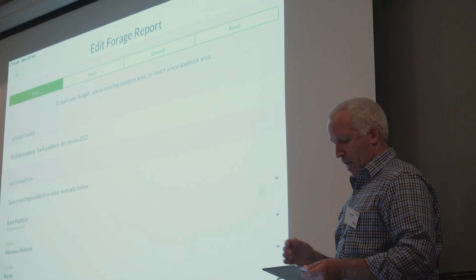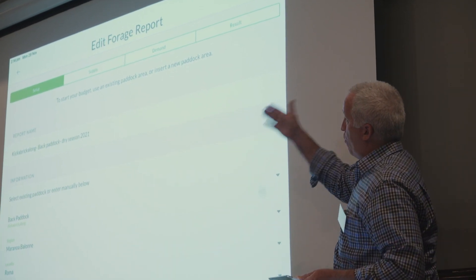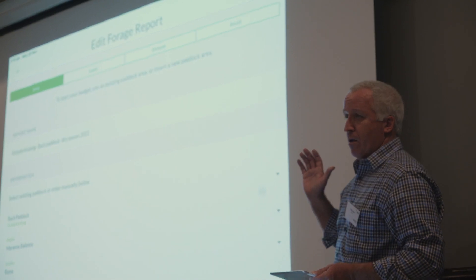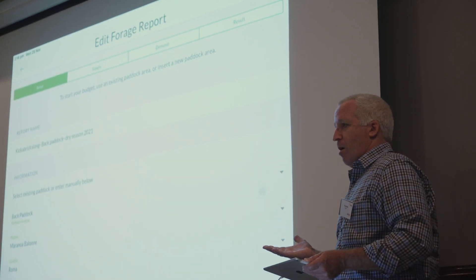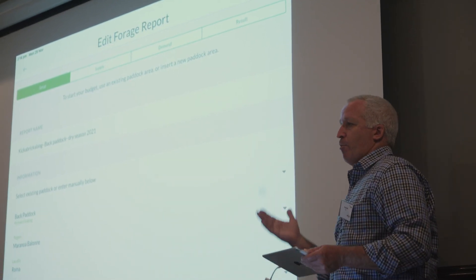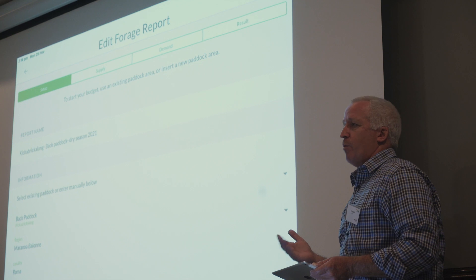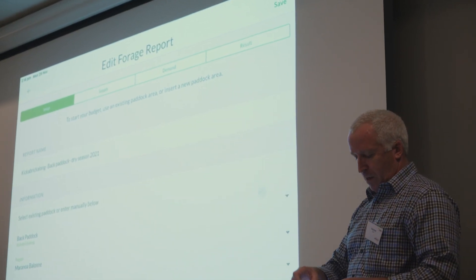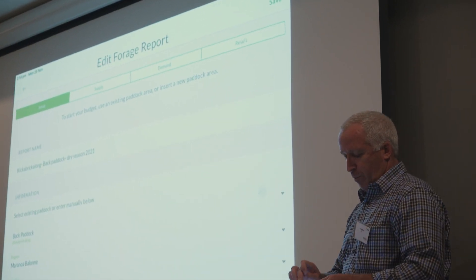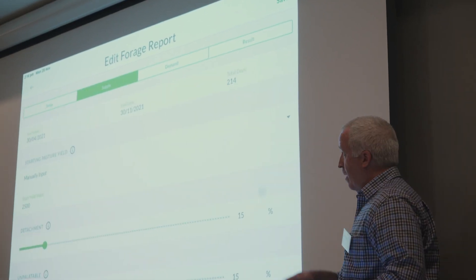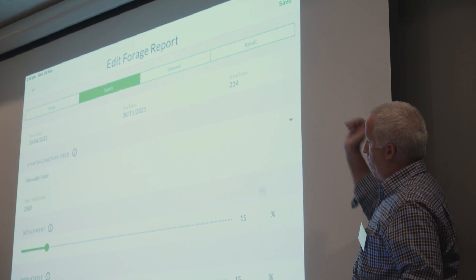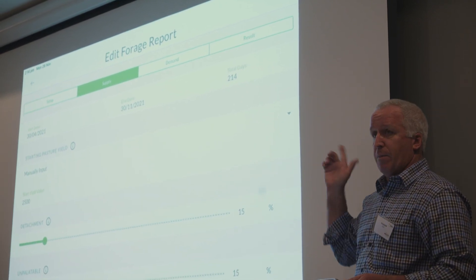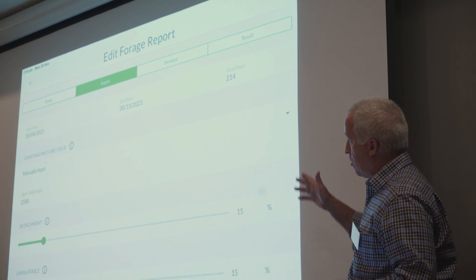You can see across the top we're working from left to right. We've set up the zone, set up the productivity zone which the app is picking up from a particular column. We'll throw in some supply — we put in a grazing day of 214 days, so just keep that in mind: 214 days.